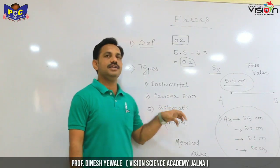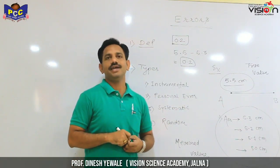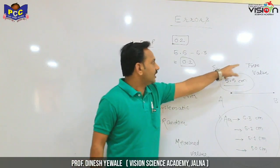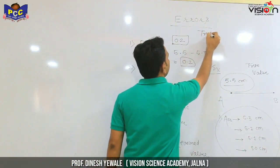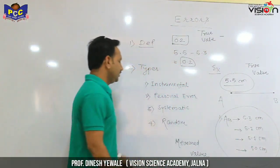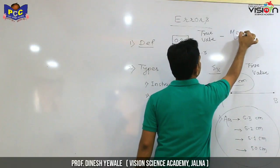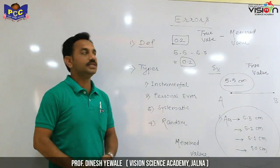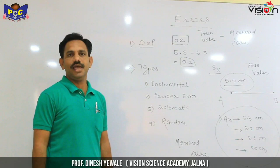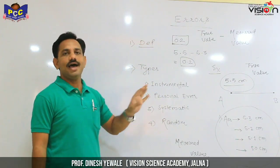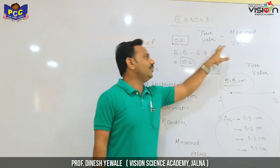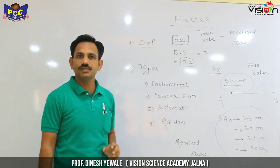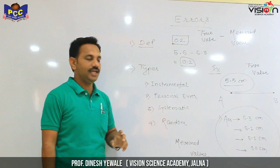So the first error is 0.2. The error is the difference between the true value and the measured value. Every reading has a difference, and that difference is the error.